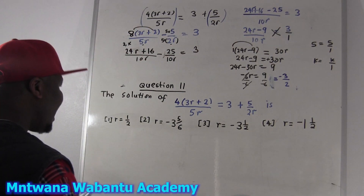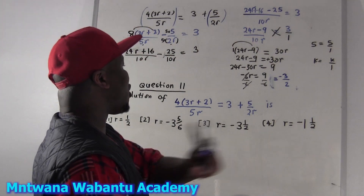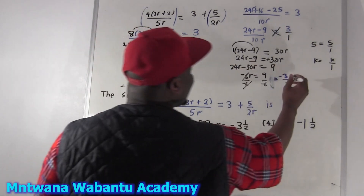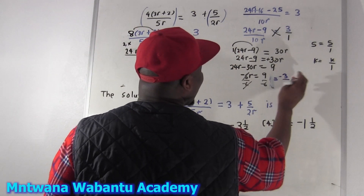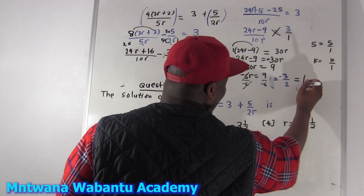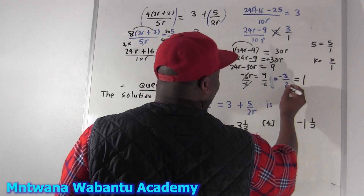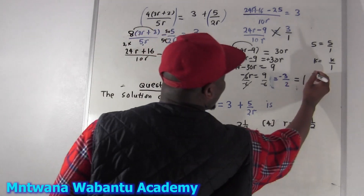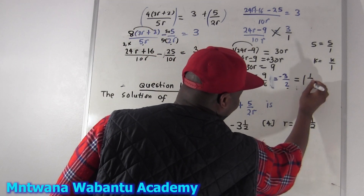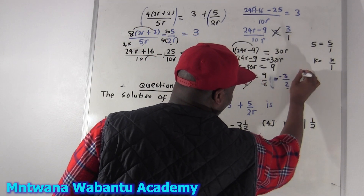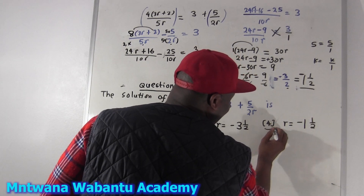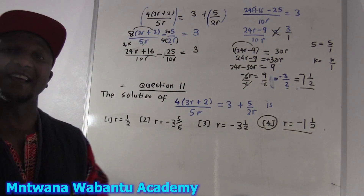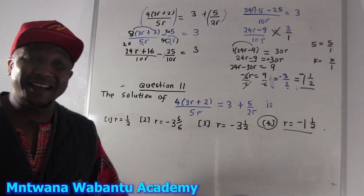So a equals negative 3 over 2. Don't forget your negative. That's our answer. You can simplify it further if needed, but negative 3 over 2 is the right option — option 4. Easy like that.